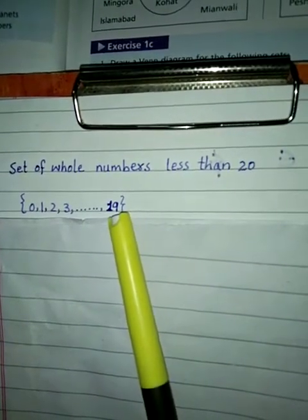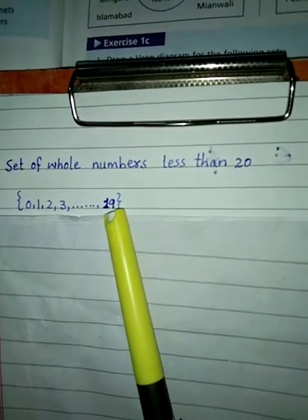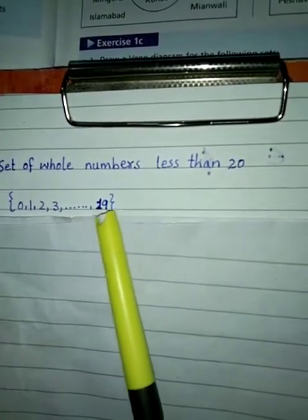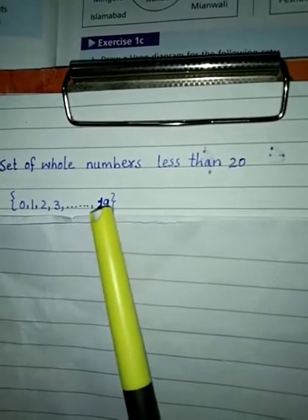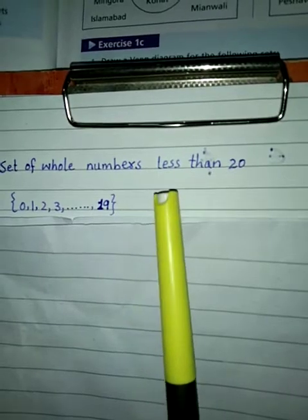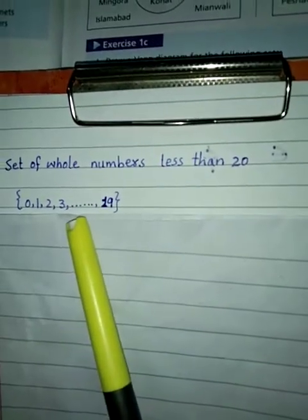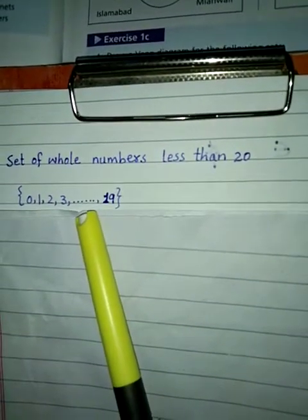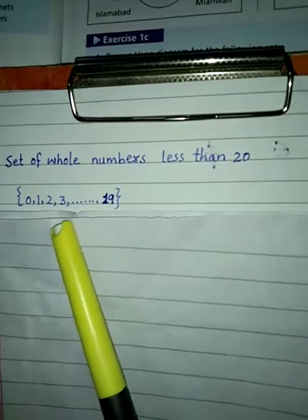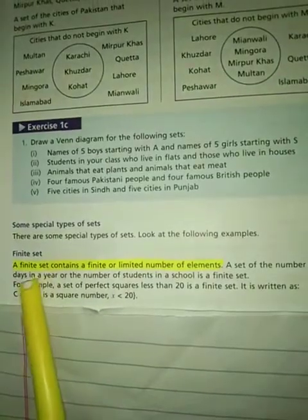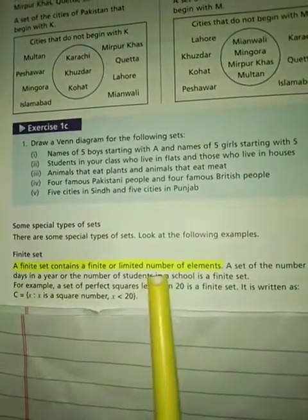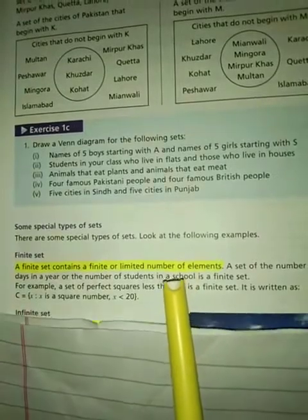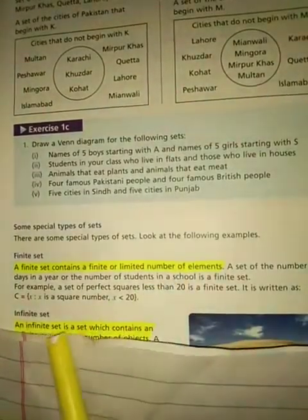جب ہمارے پاس last element آ جاتا ہے تو ہم bound ہو جاتے ہیں — اس سے زیادہ elements نہیں لکھ سکتے۔ یہ set limited ہے، اس کو ہم finite set کہتے ہیں۔ Finite set کی definition آپ اپنی books پر highlight کریں۔